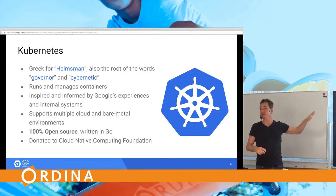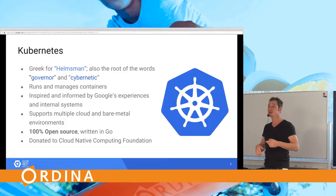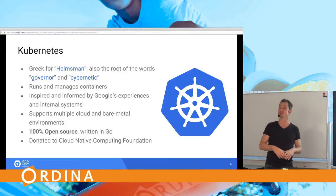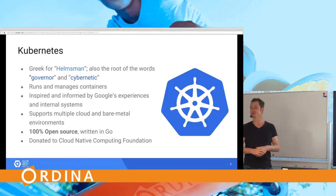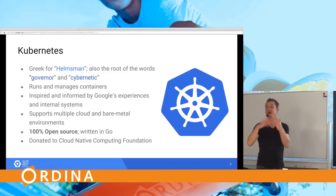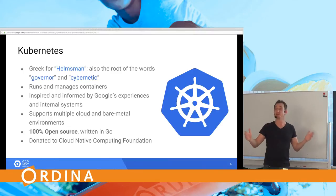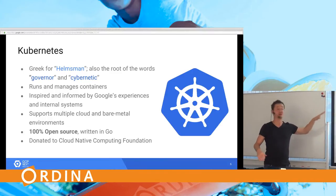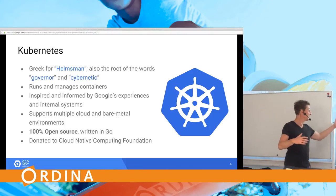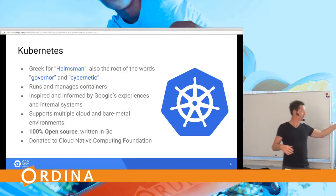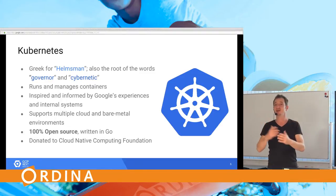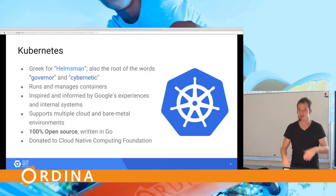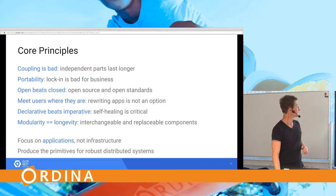Kubernetes supports multiple cloud and bare-metal environments - you can run it on Azure, Amazon, or even on a stack of Raspberry Pis. You can even have hybrid cloud, running on-premise and scaling out to multiple public cloud providers. It's 100% open source and written in Go. The stewardship is now with the Cloud Native Computing Foundation - it's out of Google's hands, they transferred leadership to a foundation. There's no vendor lock-in.